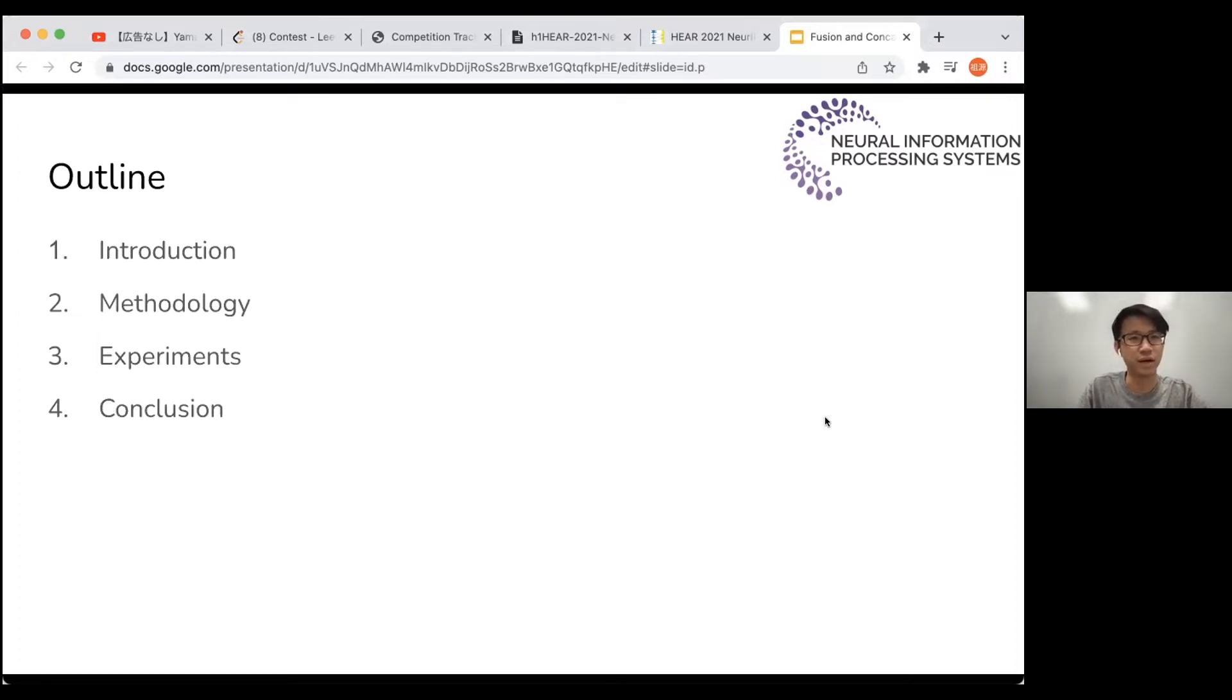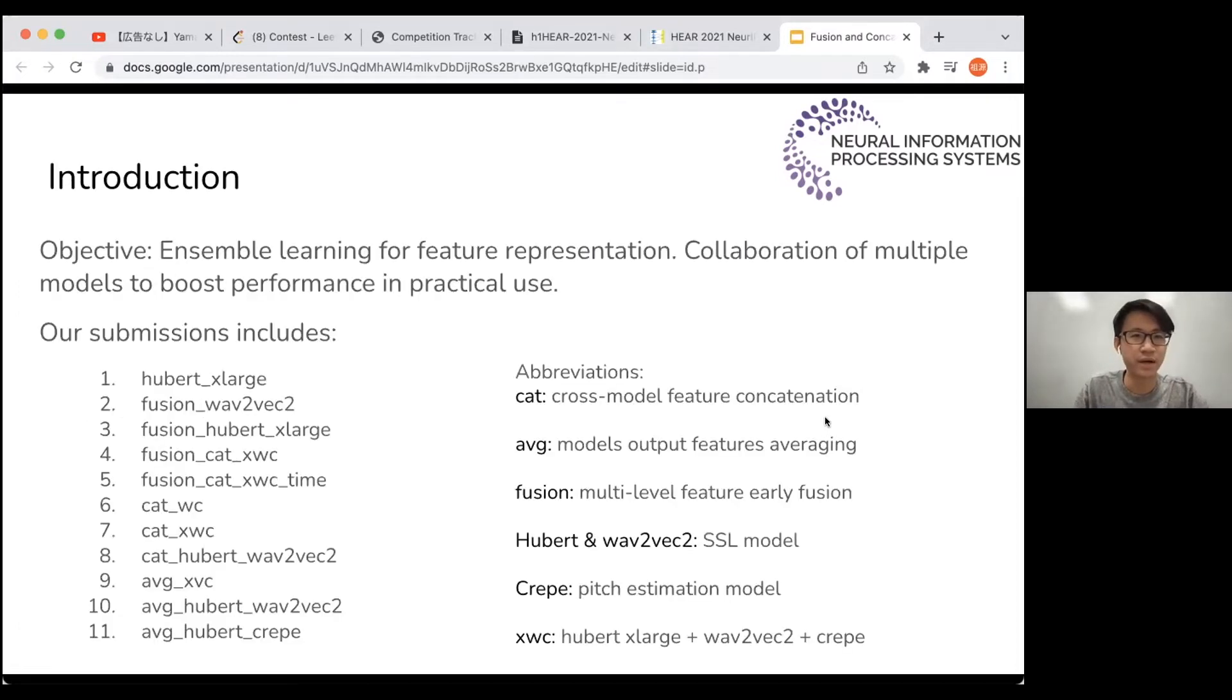So this is our outline. First, we talk about the introduction. Our objective is to focus on the collaboration of multiple models rather than the development of one single huge SSL model. So we want to see if fusing several models can bring about promising results, just like ensemble learning in traditional machine learning.